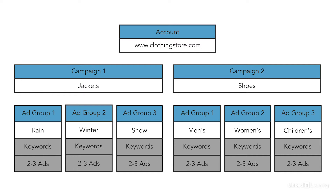For example, an online clothing retailer might organize campaigns in the same manner that their website is organized. You might have a campaign for each product category, such as one for jackets and one for shoes. And beneath those campaigns, you'll have ad groups that add more granularity.